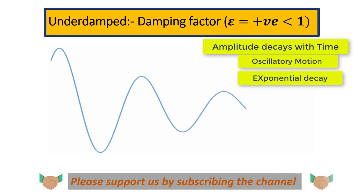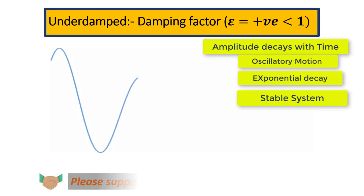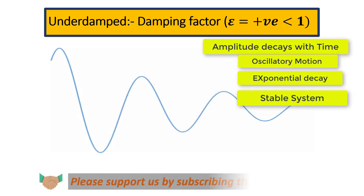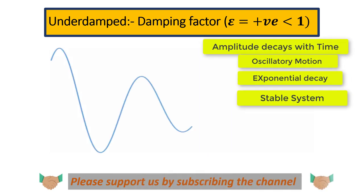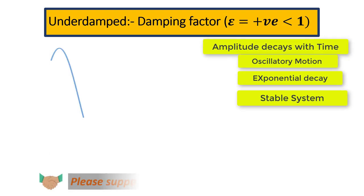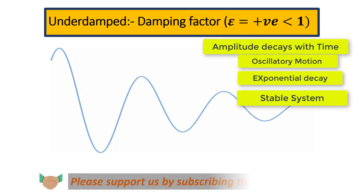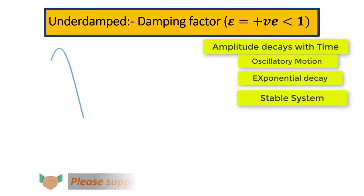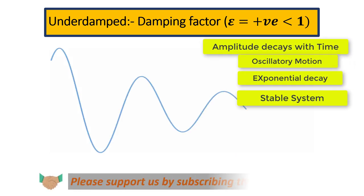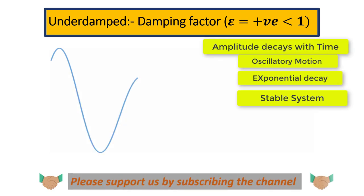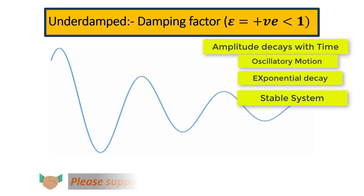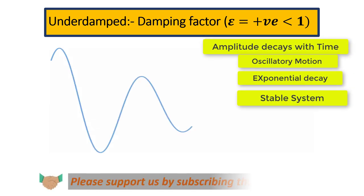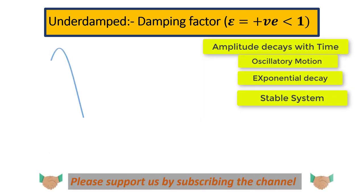This system can be called a stable system. The basic definition of stability is that if you provide any excitation to a structure and that structure comes back to its equilibrium position, the system is dynamically stable. If the stiffness is positive, it is also statically stable. In this case, after vibrating for some time the structure returns to its initial equilibrium position, so this system is both dynamically and statically stable.